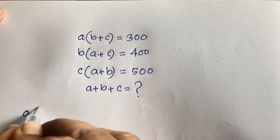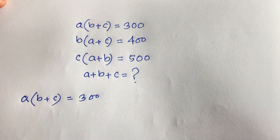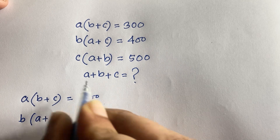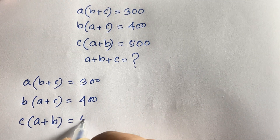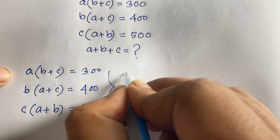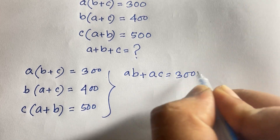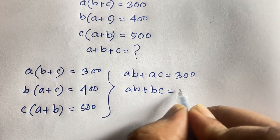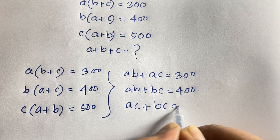Our first equation is a times (b plus c) equal to 300, which expands to ab plus ac equals 300. Our second equation is b times (a plus c) equals 400, which expands to ab plus bc equals 400. Our third equation is c times (a plus b) equals 500, which expands to ac plus bc equals 500.